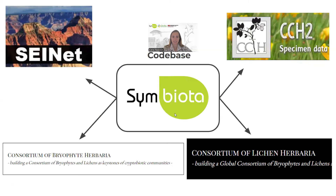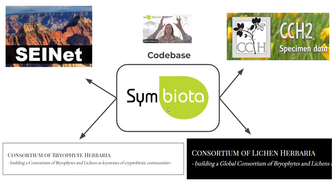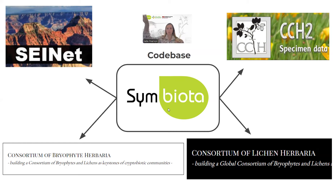Symbiota itself is just open source code managed in a code base in GitHub. People check out branches or forks of the code base, make edits, and then move that code back into the central code base. This means multiple developers can be working on and improving different parts of the code at one time. This code base is then deployed to multiple different portals — CCH2, iDigBio, the bryophyte and lichen portals, and others.